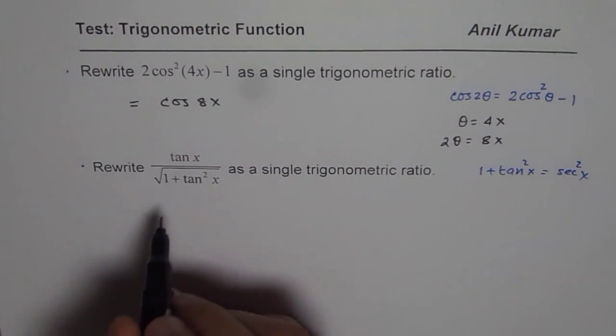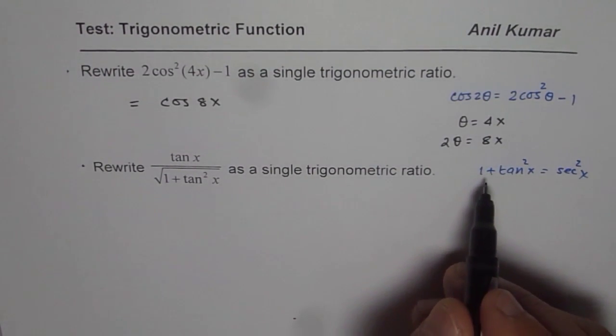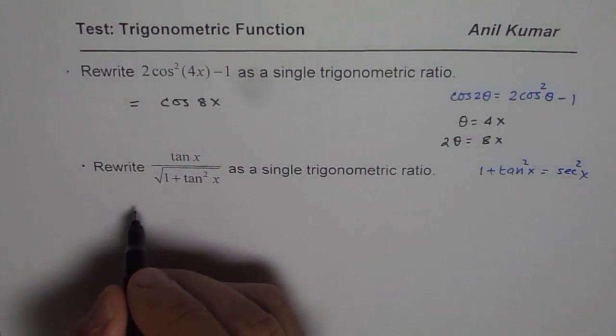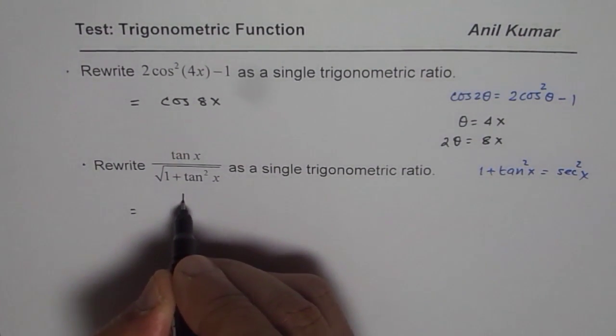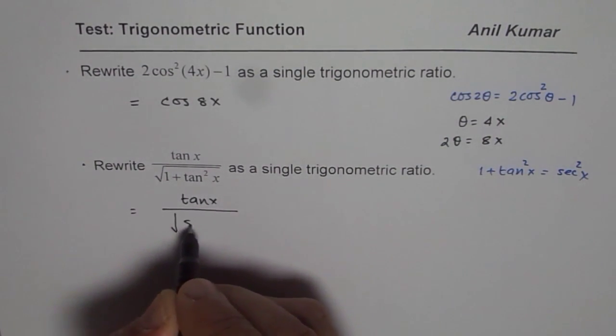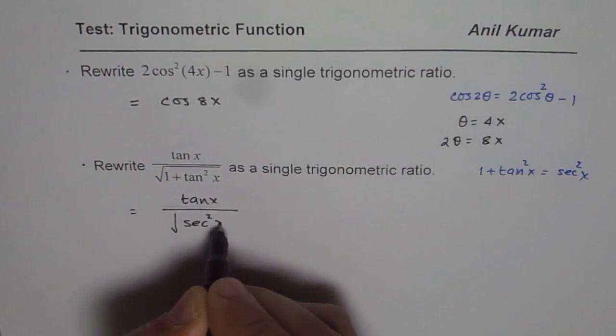Let us do the next one. Here, as I have said, 1 + tan²x = sec²x. So we can rewrite the expression as tan x over square root of sec²x.